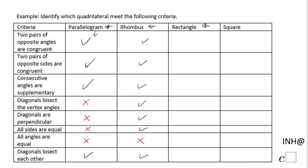Now let's go to rectangle. A rectangle is a special type of parallelogram, so the first four parallelogram properties are all true. Diagonals bisect the vertex angle — no, that doesn't work for a rectangle. Diagonals are perpendicular — no. All sides are equal — no. All angles are equal — yes, that works for a rectangle because all angles are 90-degree angles.